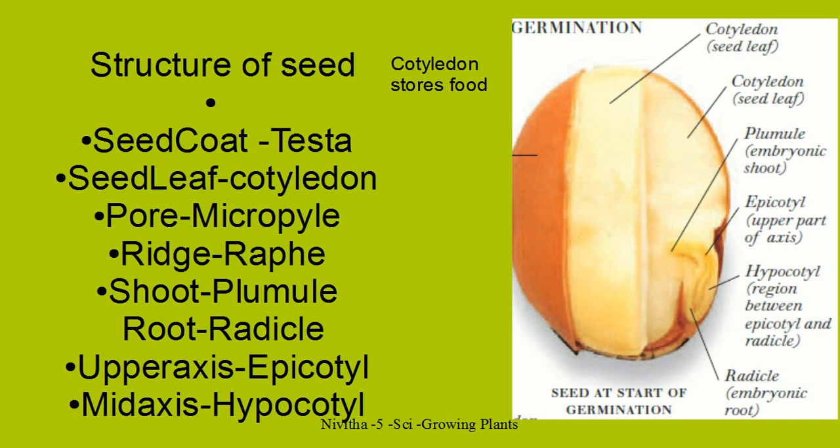What is the structure of a seed? This is a sample seed. This is the cotyledon — the thick portion of the seed. The outside portion is the seed coat, also called testa. This is the cotyledon or seed leaf. This is a side view and this is a cut inside lateral view.